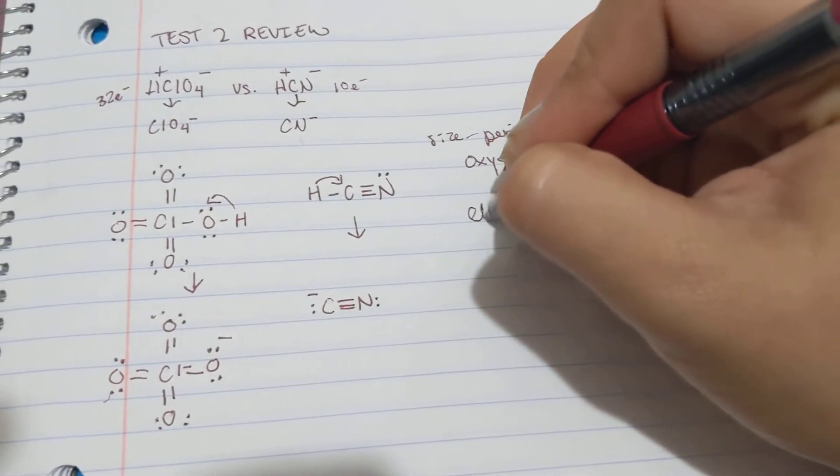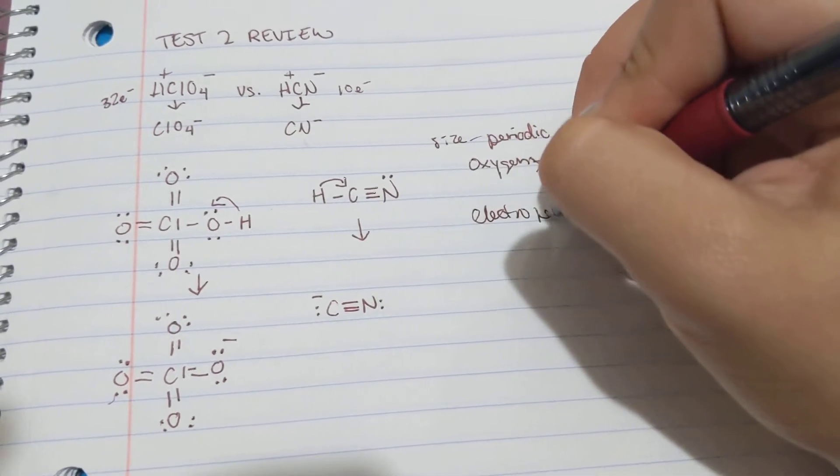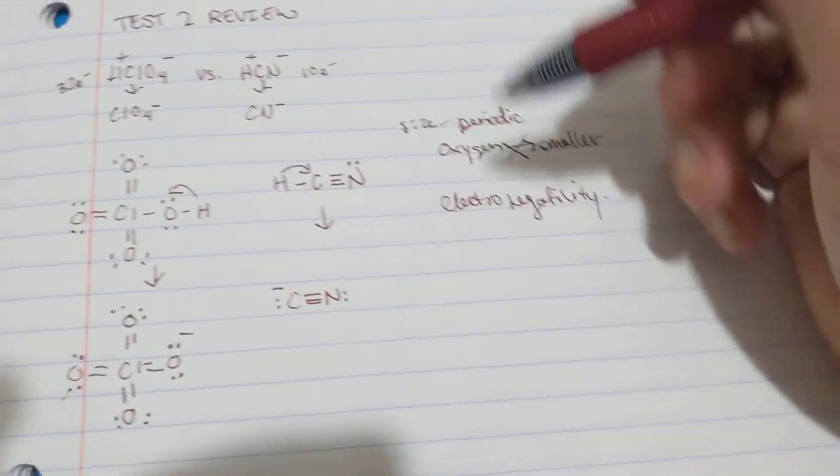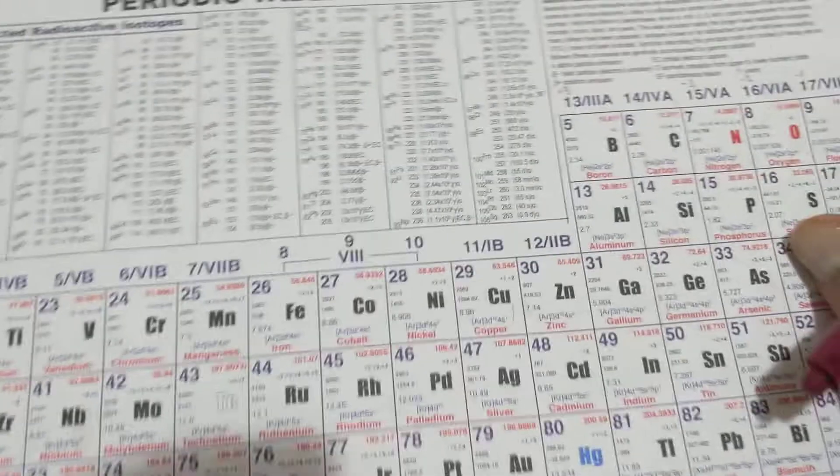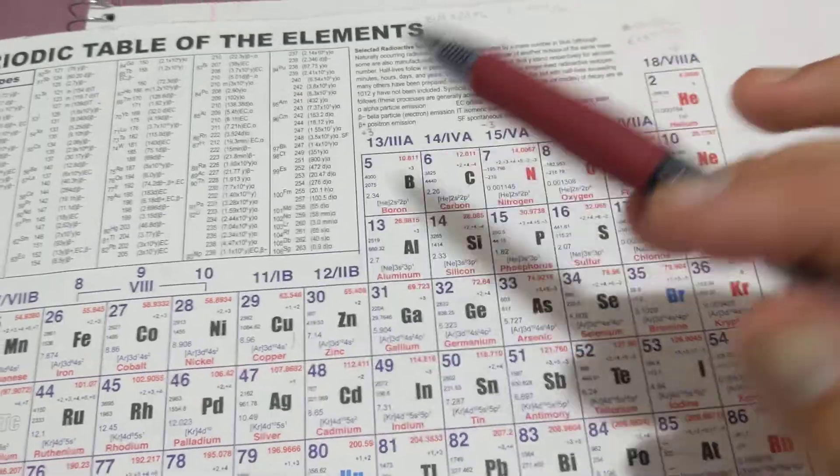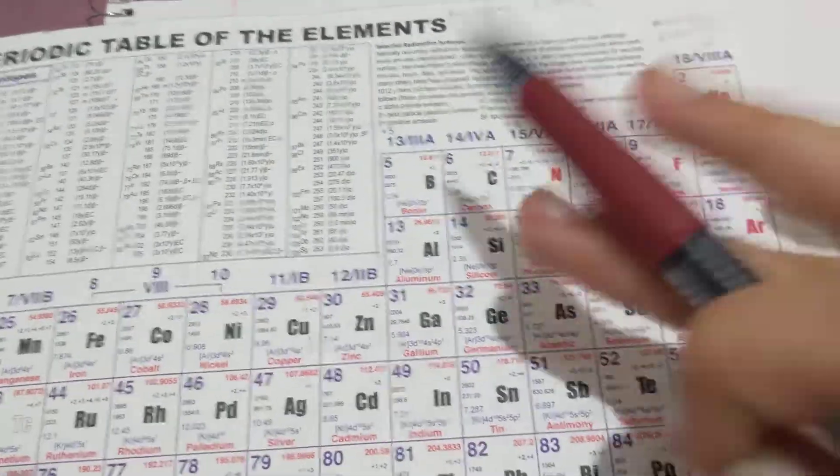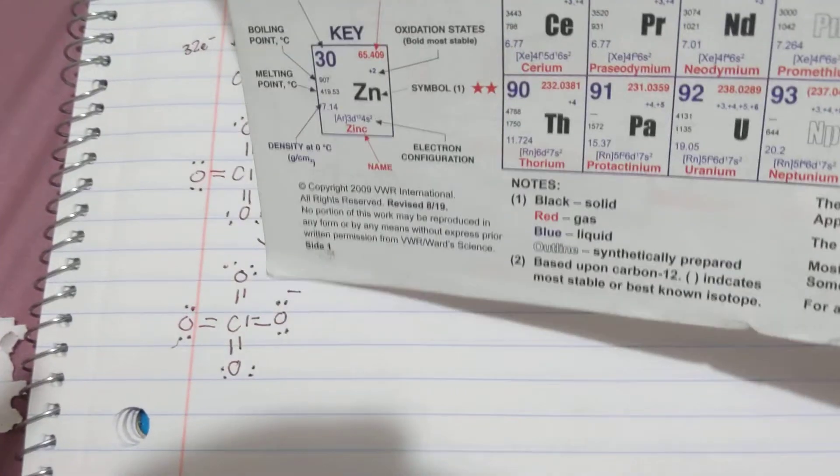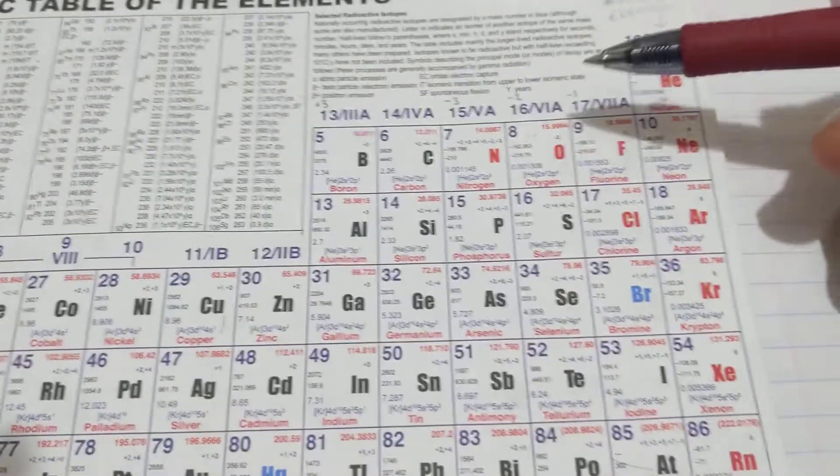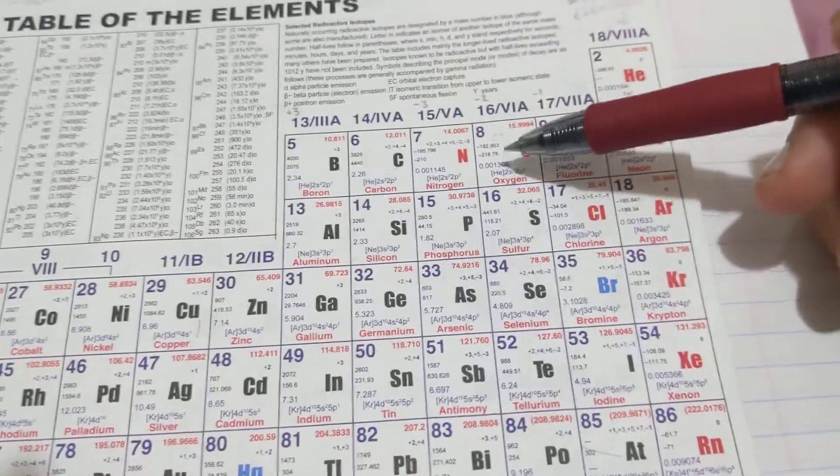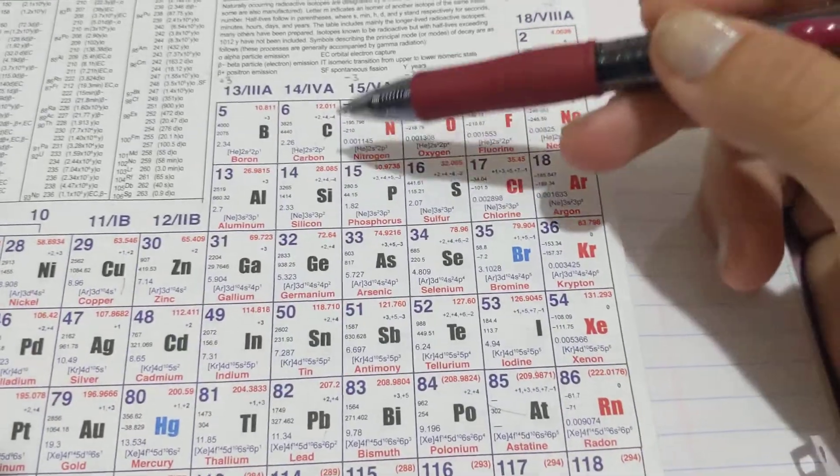So we move on to electronegativity. Electronegativity is also determined on your periodic table. Here's my periodic table. Which one is more electronegative? That's determined by going to the right. The further right you are, the more electronegative. And we look at the neighbors of our Lewis structure. So the neighbor here is Cl and the neighbor here is N. But oxygen is already more electronegative than carbon. And carbon is attached to N, which is still less electronegative than oxygen. And Cl is much more electronegative than all of them.